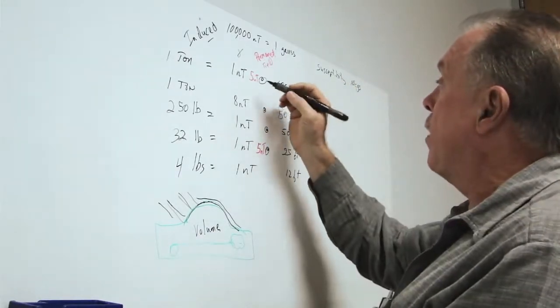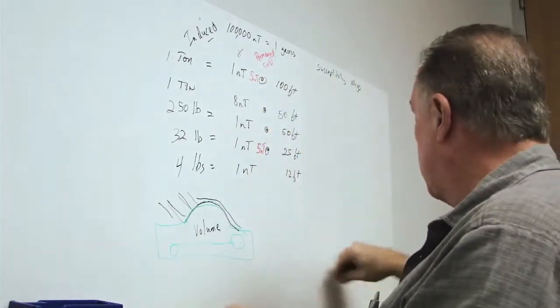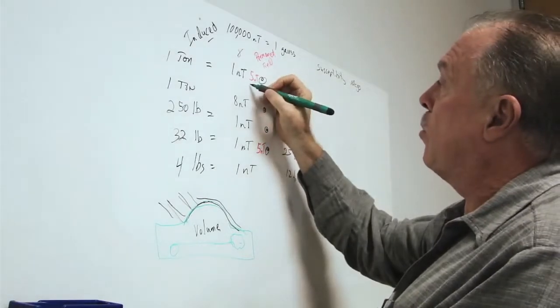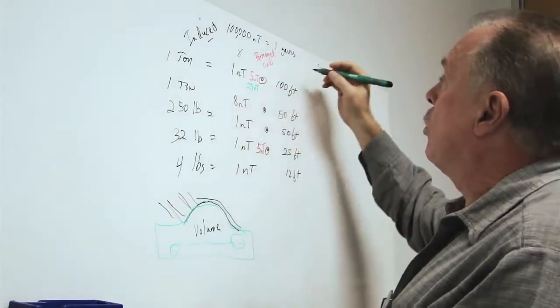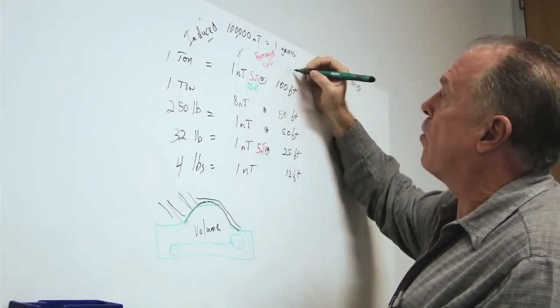And so again, we might then be able to raise this 5 nano Tesla up to perhaps 25 nano Tesla. And this is due to the volume effect.